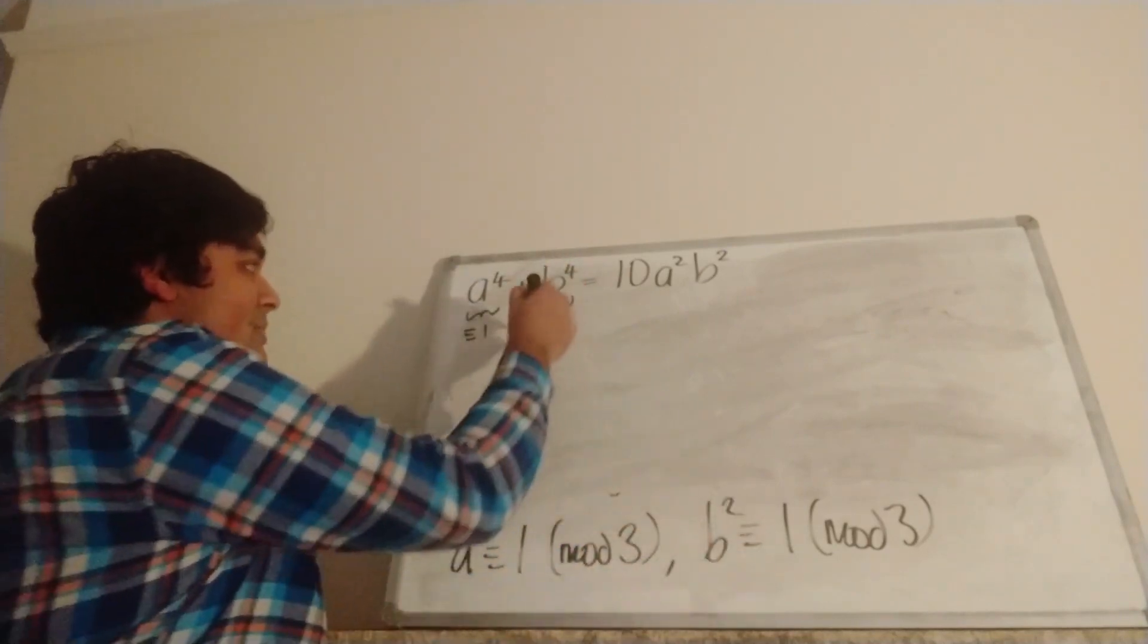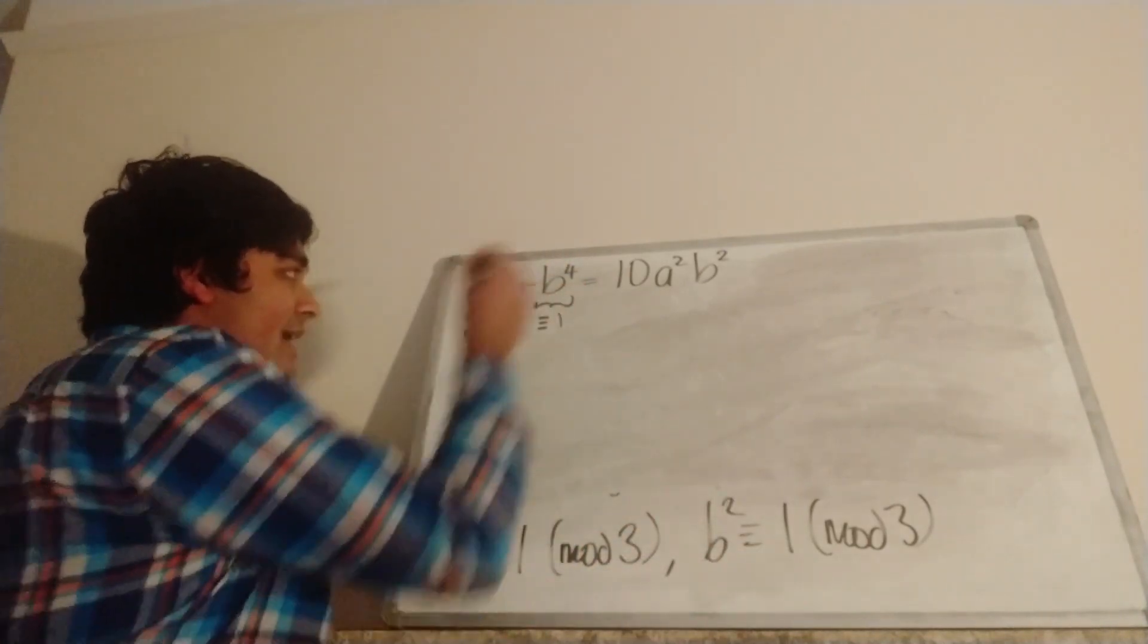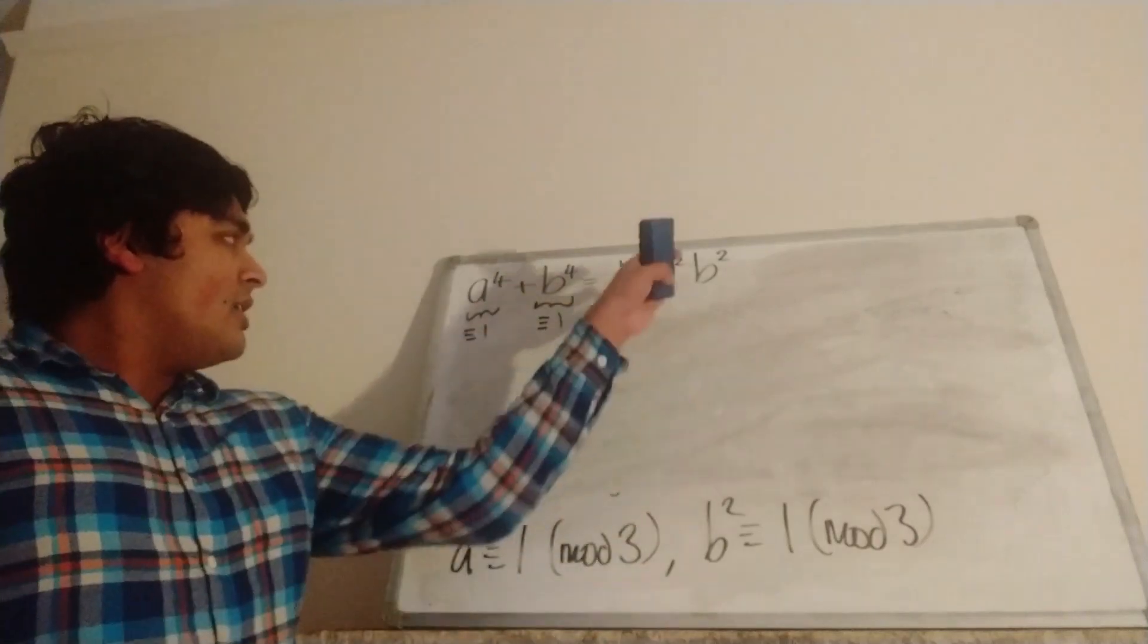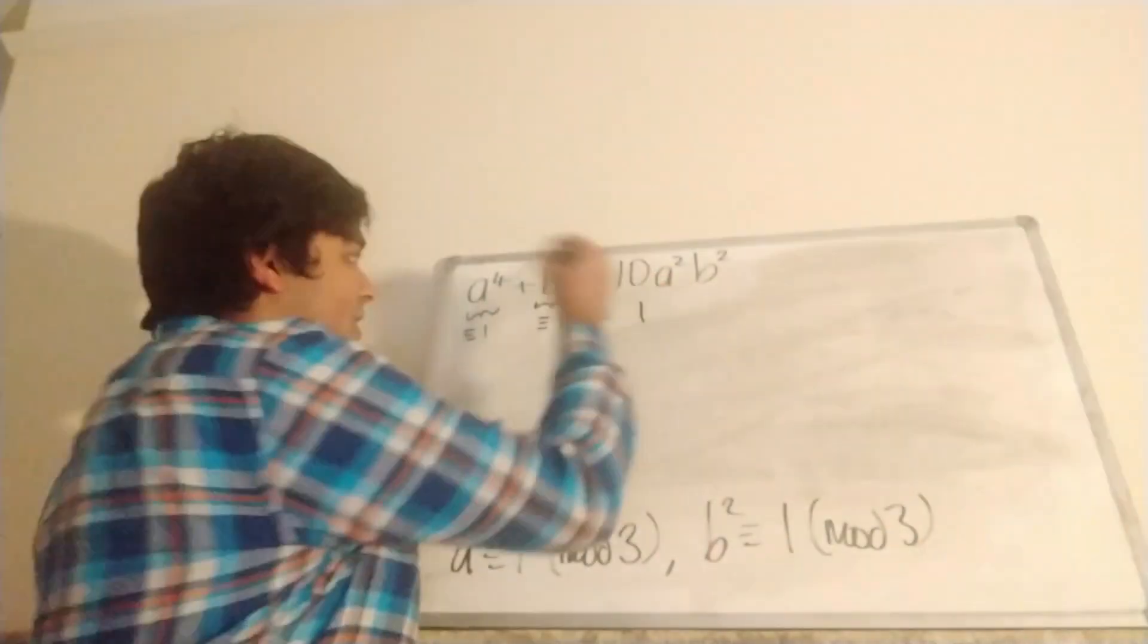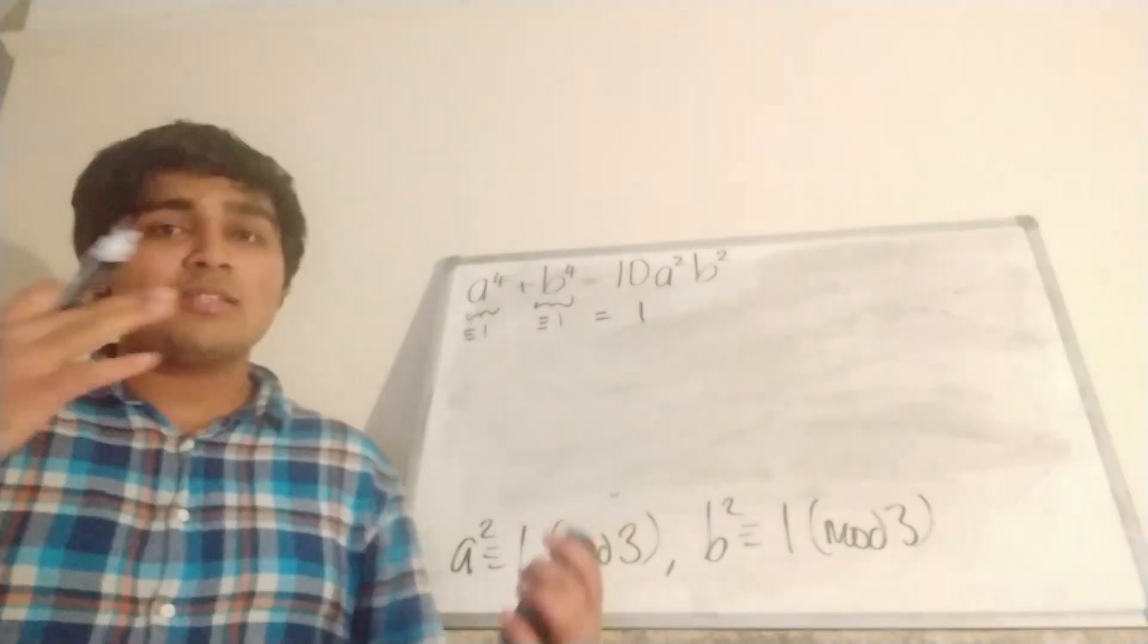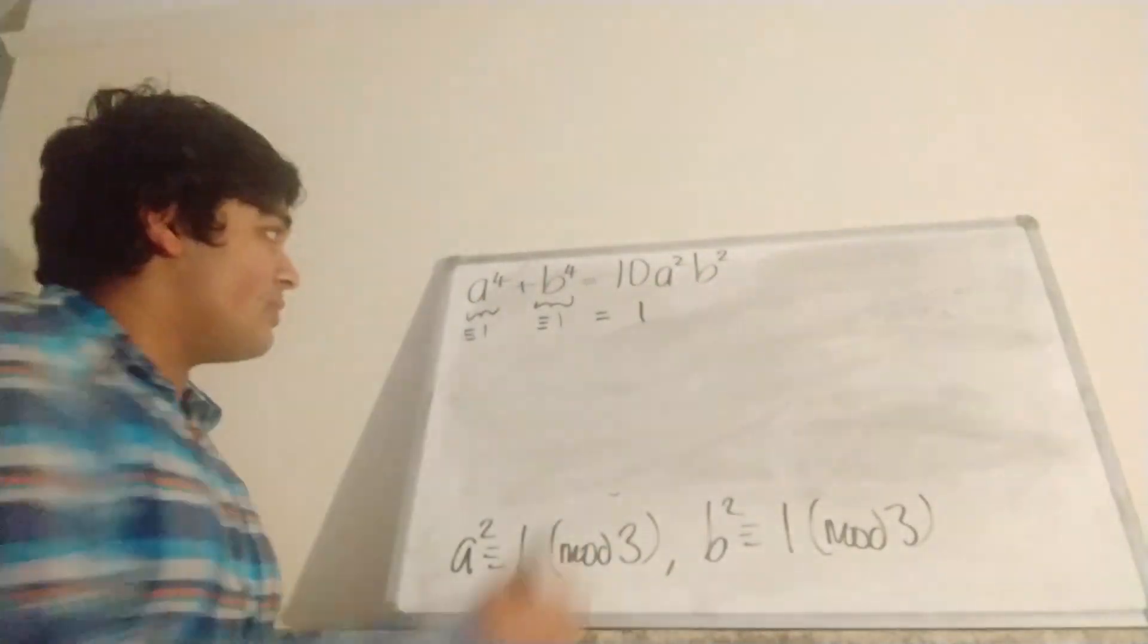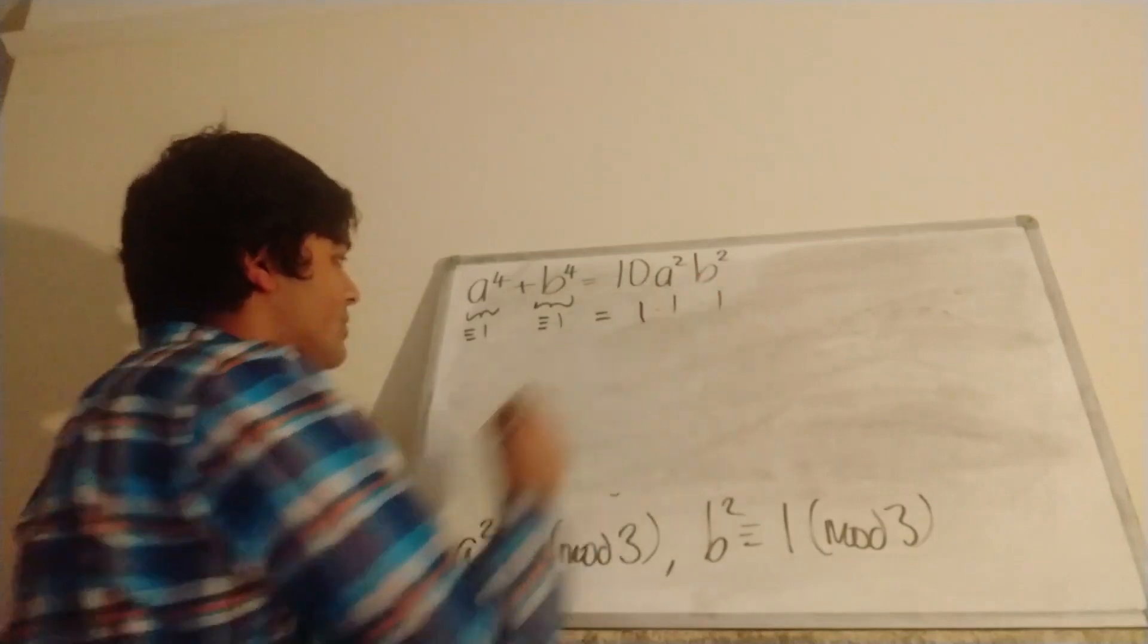Similarly, B² is congruent to 1, so B⁴ is congruent to 1. And now this right-hand side, we have 10, well that's congruent to 1, because 10 is 3 times 3 plus 1. A² is congruent to 1, and B² is congruent to 1.